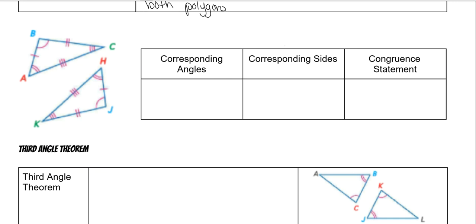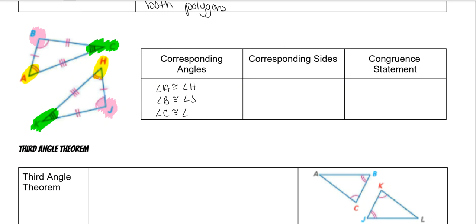Let's look at corresponding angles. My A has a double arc, and that has to go with the other double arc, which is H. My B has a single arc, and that goes with my other single arc, which is J. And then C has a triple arc, and that will go with my other triple arc, which is K. So corresponding angles: angle A is congruent to angle H, angle B is congruent to angle J, and angle C is congruent to angle K. They have to be written together, because those are the ones that go together.